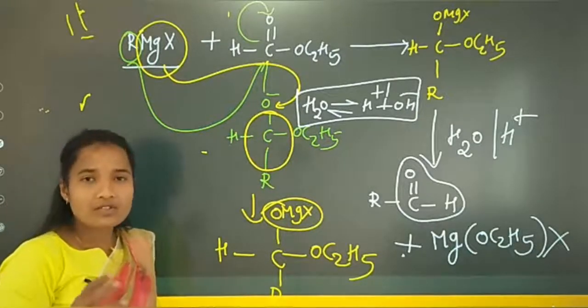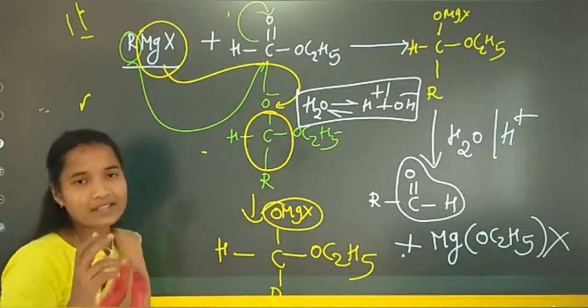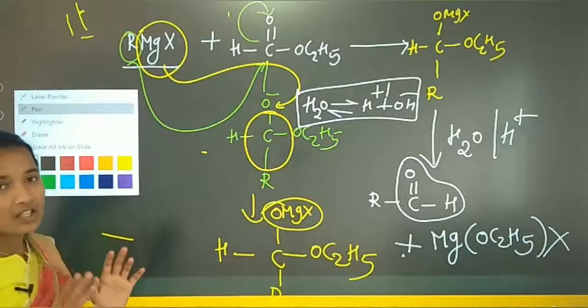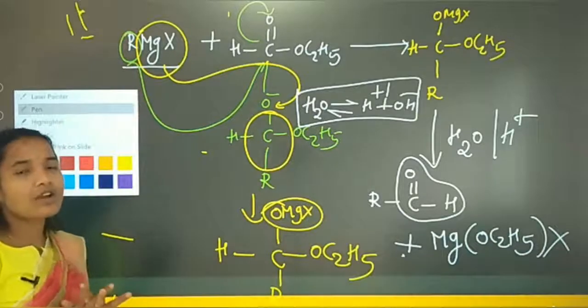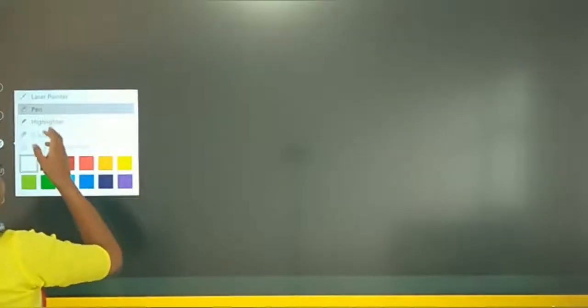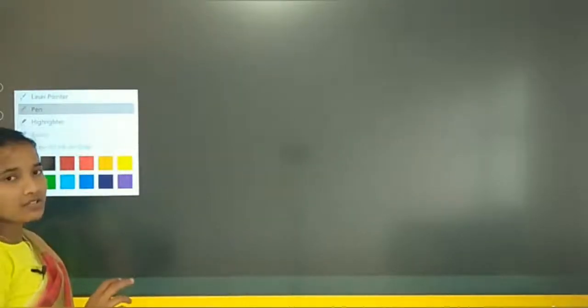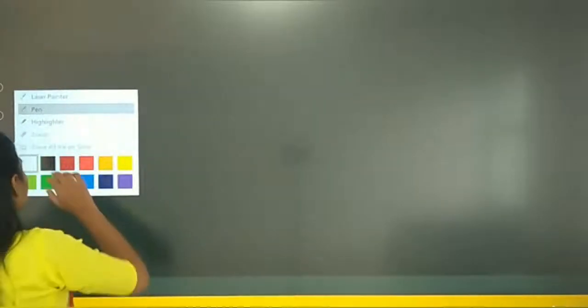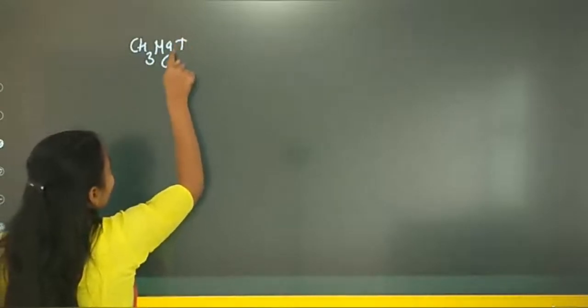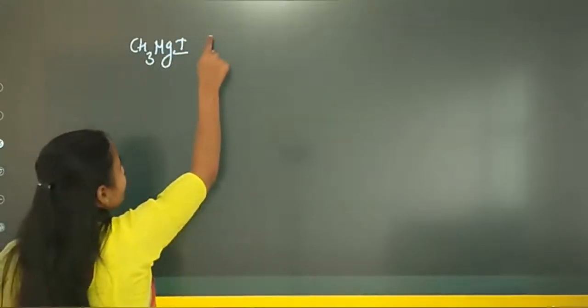For the applications of methyl magnesium iodide, wherever the R group appears, substitute CH3, and wherever X appears, substitute I. So RMgX becomes CH3MgI, which is methyl magnesium iodide. It reacts with ethyl formate, whose formula is HC(=O)-OC2H5.